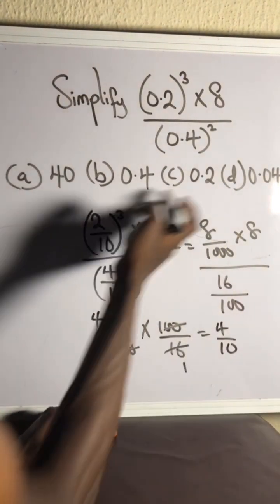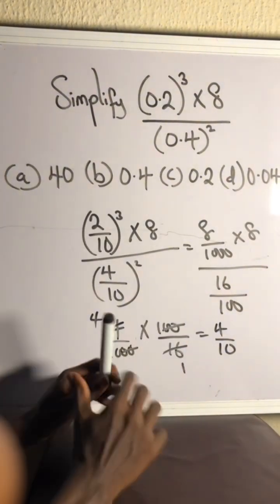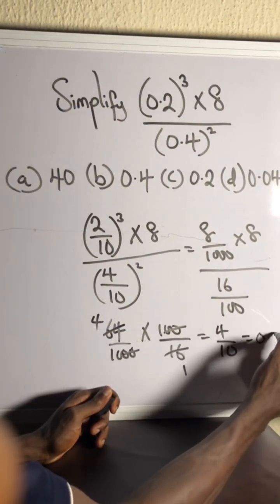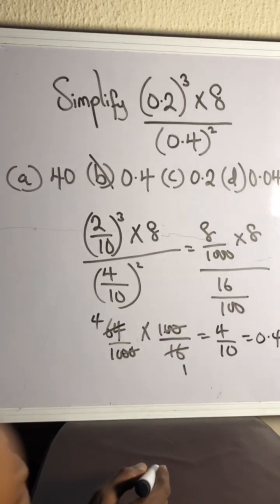Okay, 4 divided by 10. Okay, look at your options. All we got are just decimal numbers. So 4 divided by 10 is actually 0.4 and that would be option B.